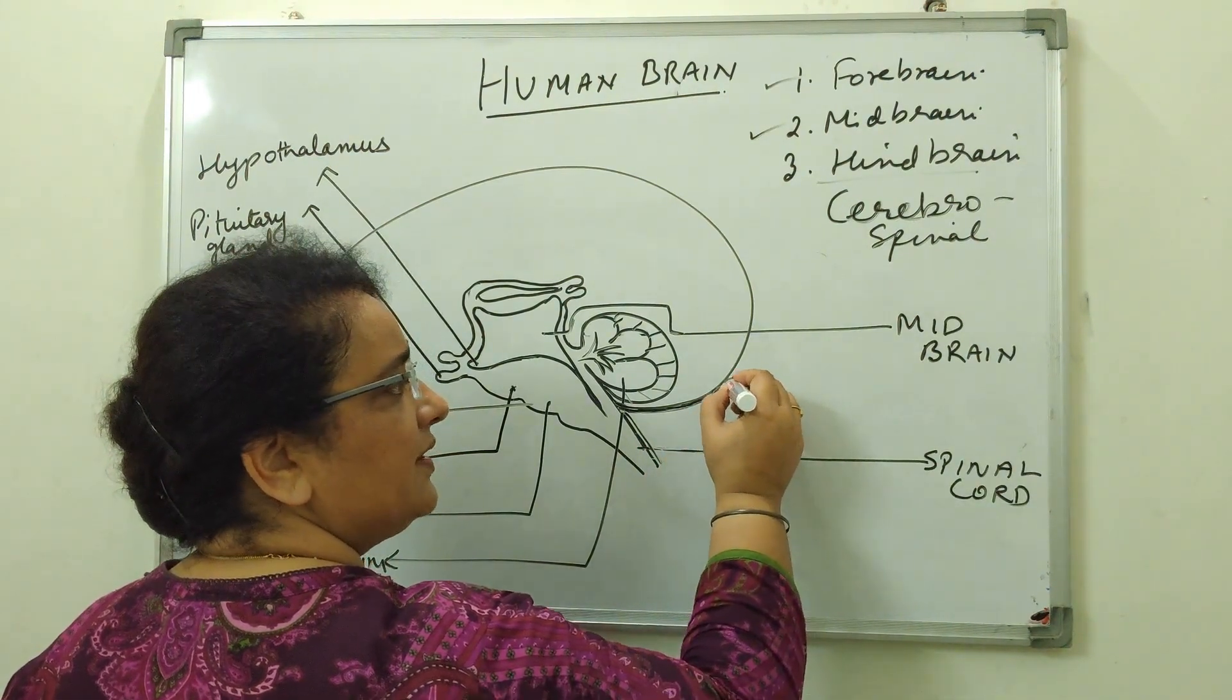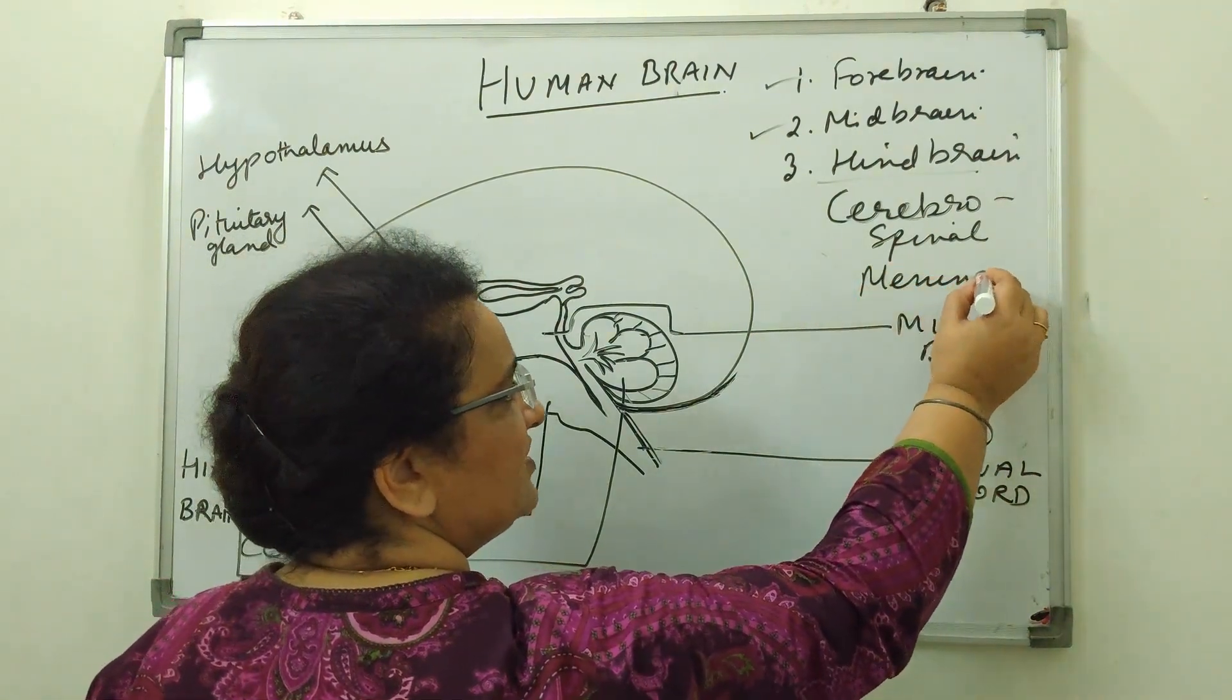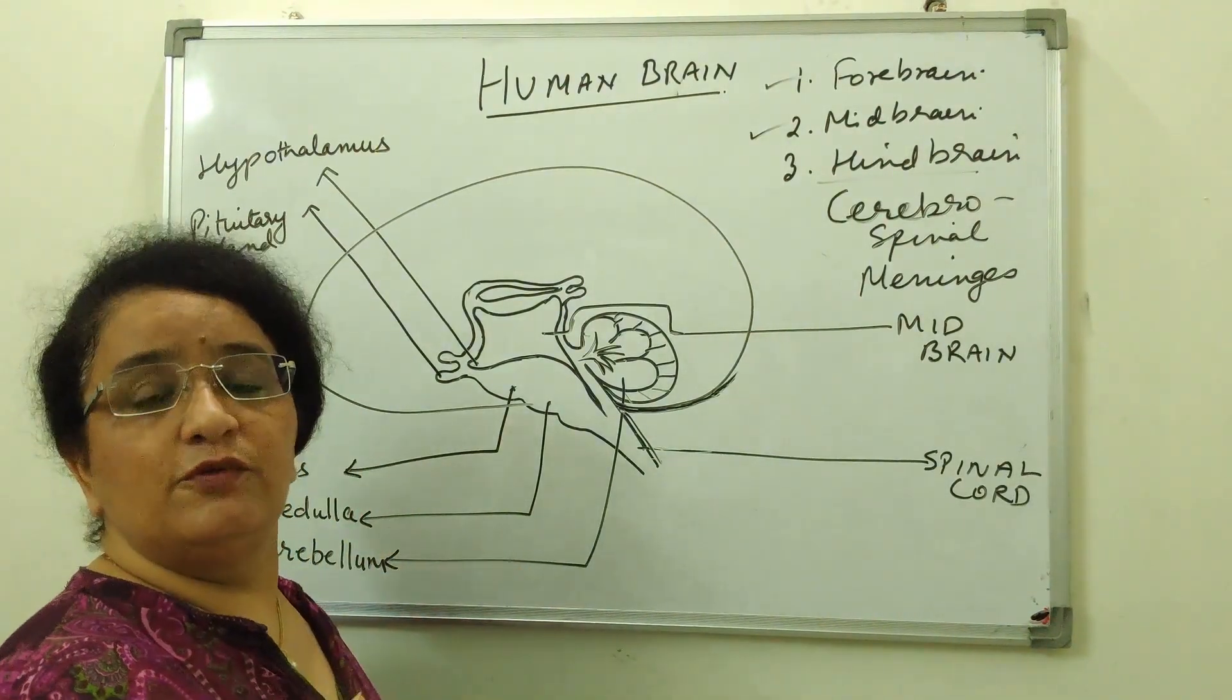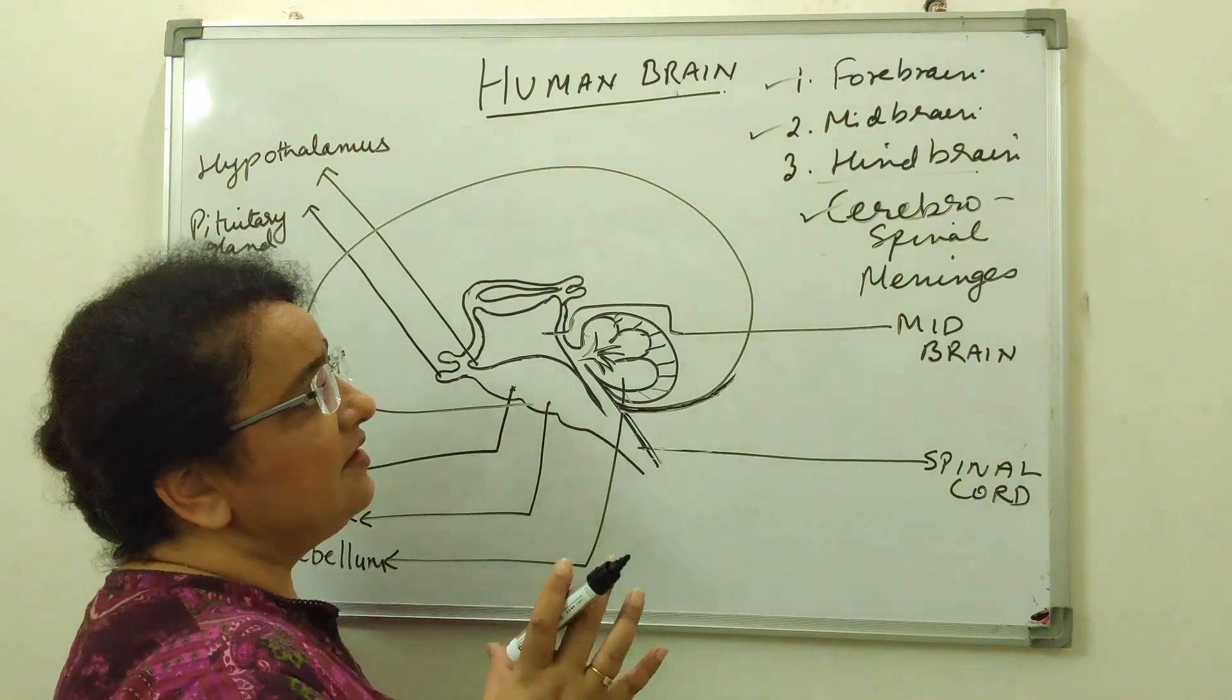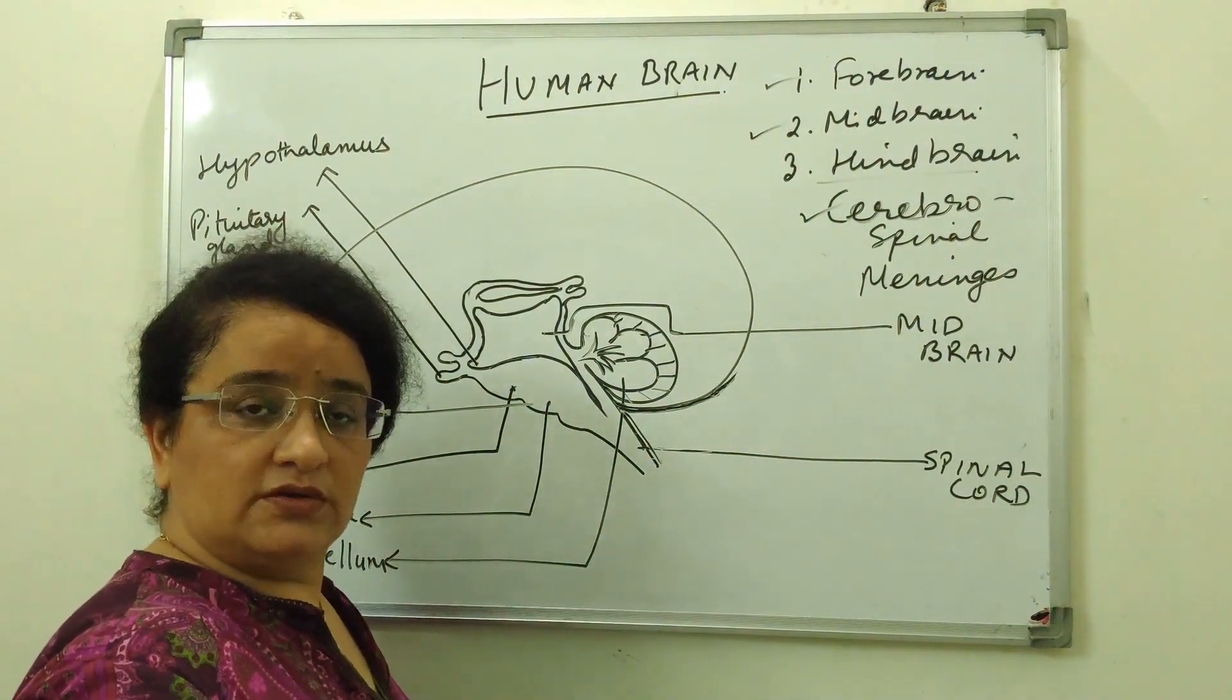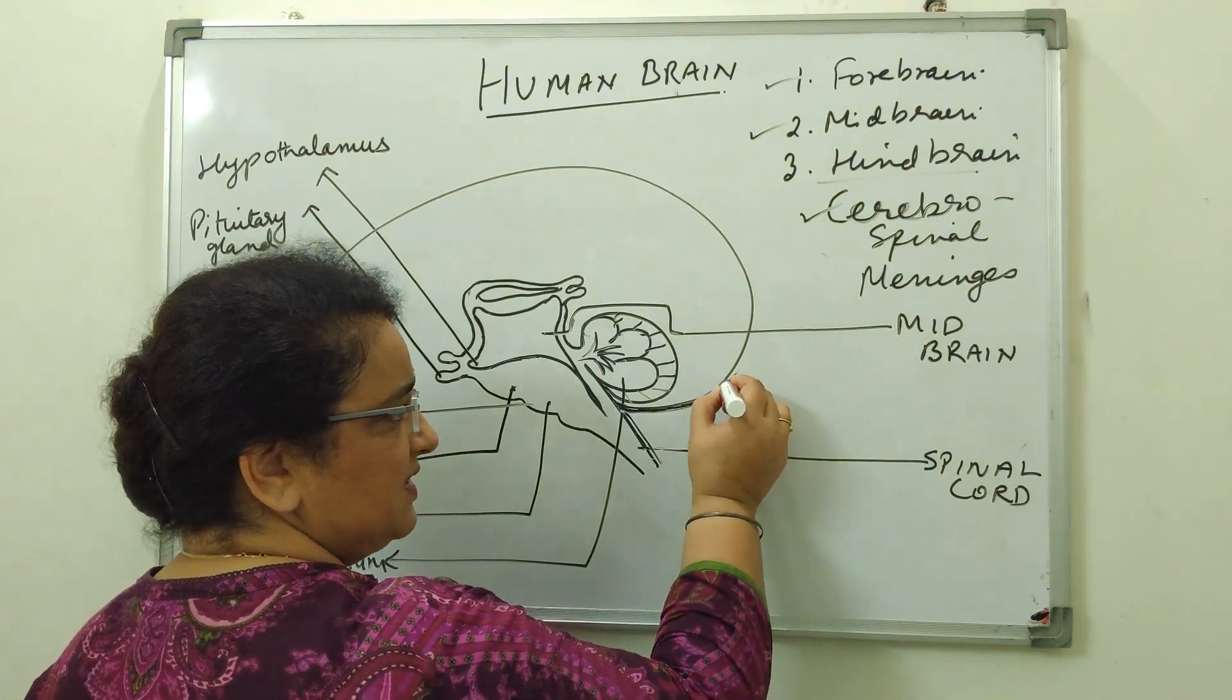The brain is protected by protective layers, three layers, called meninges. And these meninges, they enclose a cerebrospinal fluid which is protective in nature, which protects the brain and of course spinal cord against shock, shocks or any kind of injury.